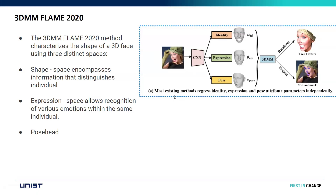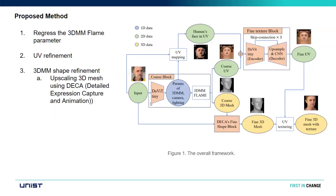In previous state-of-the-art works, given the input image, they use CNN — basically ResNet-50 — to extract features such as identity, expression, and pose. These features extracted by CNN are fed to the 3D MM, which can be the FLAME or Basel model. For this specific paper they use FLAME, proposed in 2020. Based on that, they render the face texture, project it into 2D space, and use different kinds of self-supervision loss functions to calculate the loss.